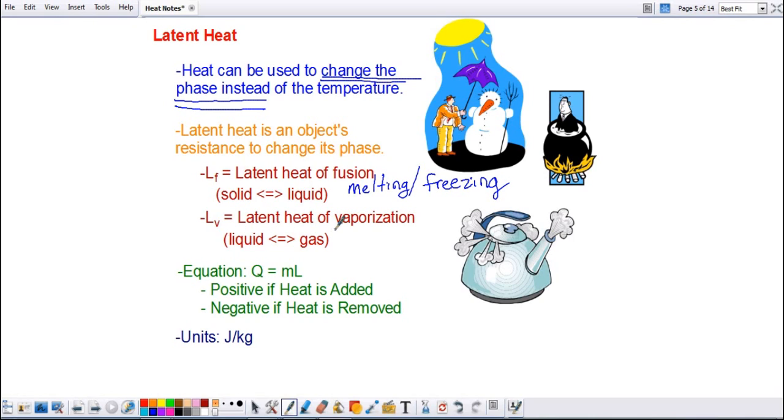And that would be the latent heat of vaporization, when the object is going from a liquid to a gas, so we're adding heat, or if it's going from a gas to a liquid when we're removing heat. So this is used when we are boiling, if we're adding the heat, or when it is condensing, if there's heat being removed.